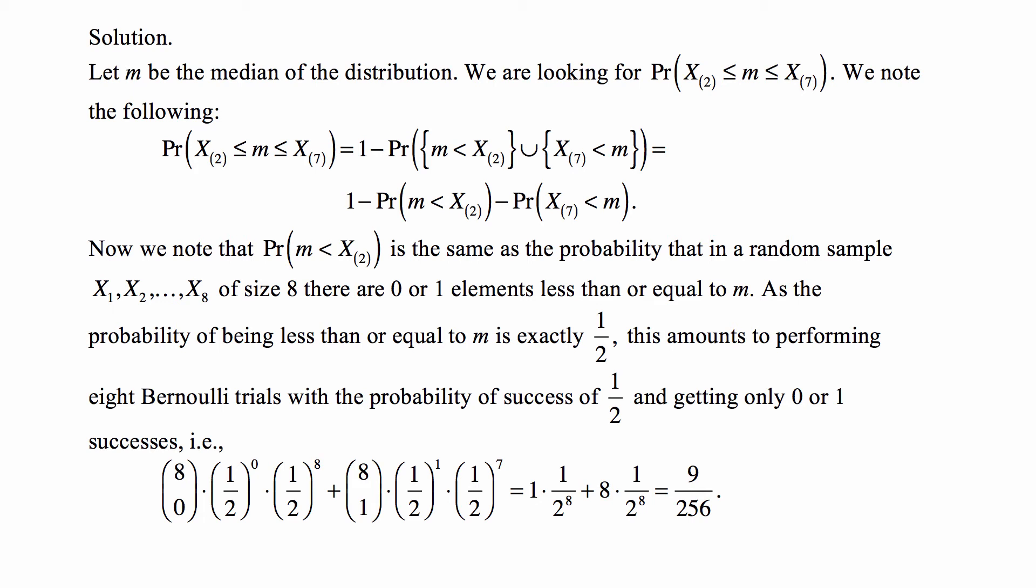As the probability of being less than or equal to m is exactly one half because it's a median, this amounts to performing eight Bernoulli trials with the probability of success of one half and getting only zero or one successes. The probability of that is given by the standard binomial formula because performing eight independent Bernoulli trials results in the number of successes following the binomial distribution with probability of success of one half.